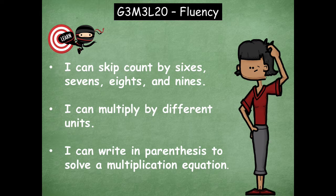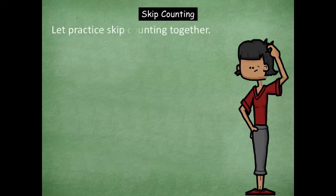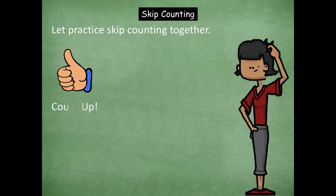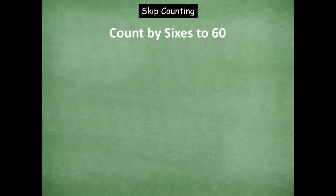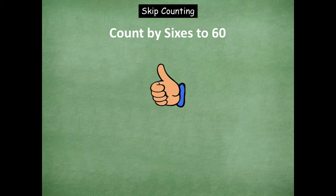Now we're going to jump in and get started with our actual fluency activities. We're going to do some skip counting together. Thumbs up means we're counting up, the fist means stop, and thumbs down means we're going to count down. First we're going to start by counting by sixes to 60.